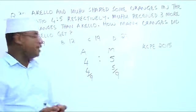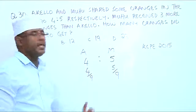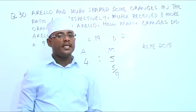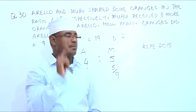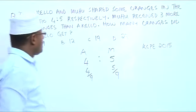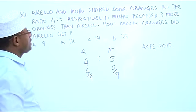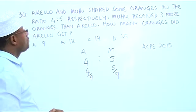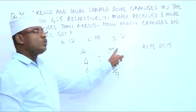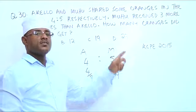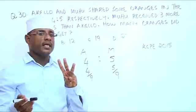You can see that if we add 4 over 9 plus 5 over 9, we get 9 over 9, which is equal to 1. The question is telling us that Muhu received 3 more oranges than Akelo.